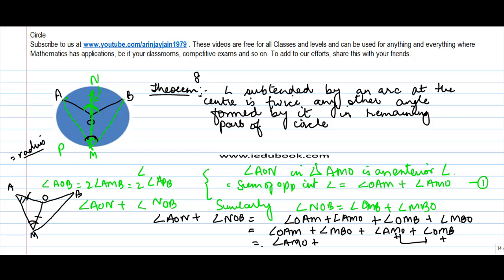Similarly, angle MBO - this again, this is equal to this because both of them are equal to the radius. So you can write angle MBO as OMB. So angle AOB becomes equal to sum of all these four, which is nothing but two times angle AMO plus angle OMB. And hence proved.